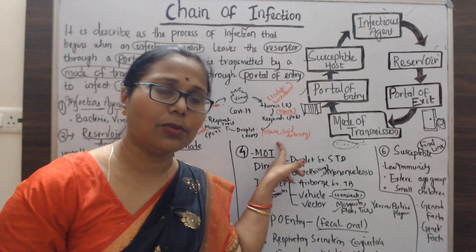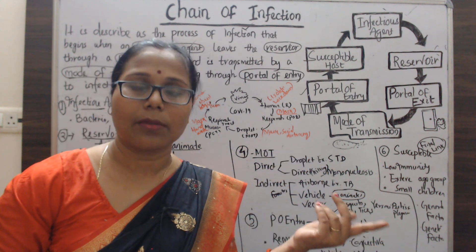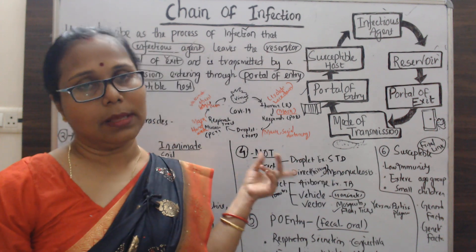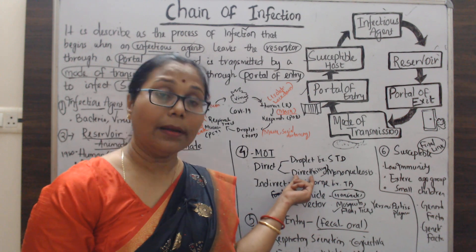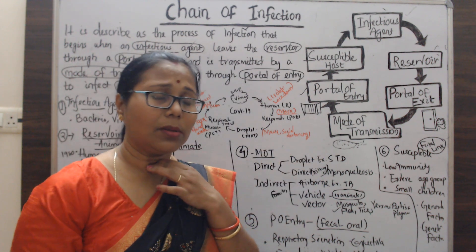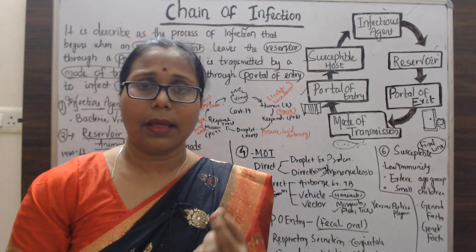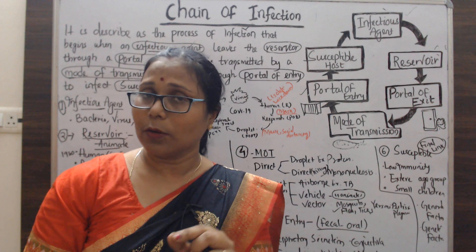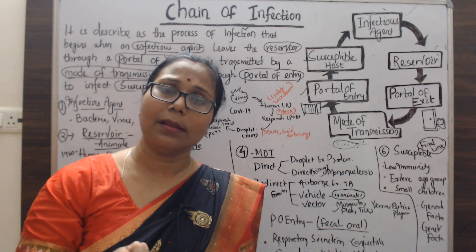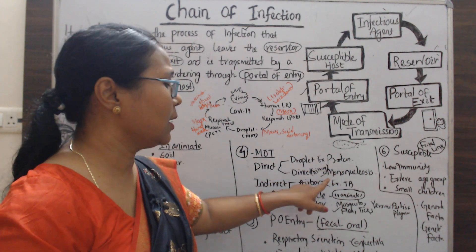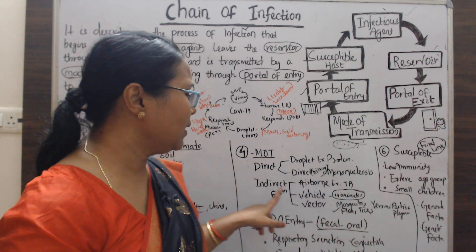The fourth component is the mode of transmission. After coming out of the reservoir, microorganisms move to another host either directly or indirectly. In the direct way, transmission occurs through droplets or direct skin-to-skin contact. In droplet transmission, aerosol particles less than 0.5 micrometers in size move through the air, and even when dried, their nuclei remain in a dormant stage. Direct kissing transmits mononucleosis disease; skin-to-skin contact is another direct route.